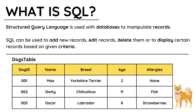For the OCR GCSE 2020 specification, however, you just need to know how to select data, and that requires only three commands. I'm going to use the dogs table that you can see here in this video to explain how SQL is used.